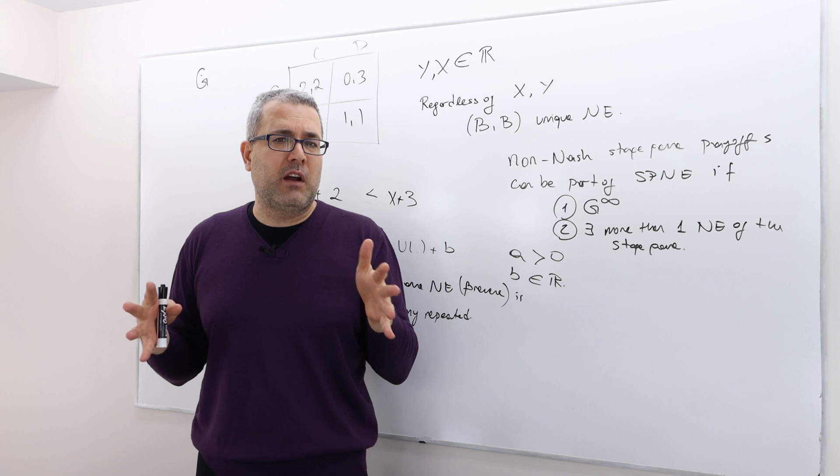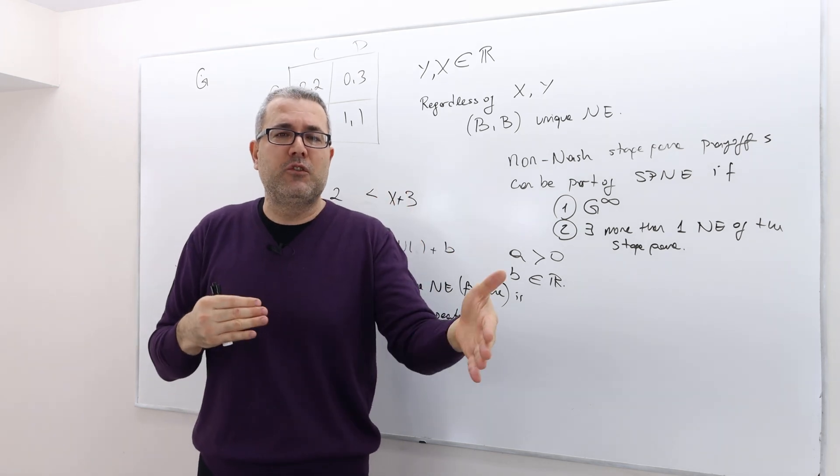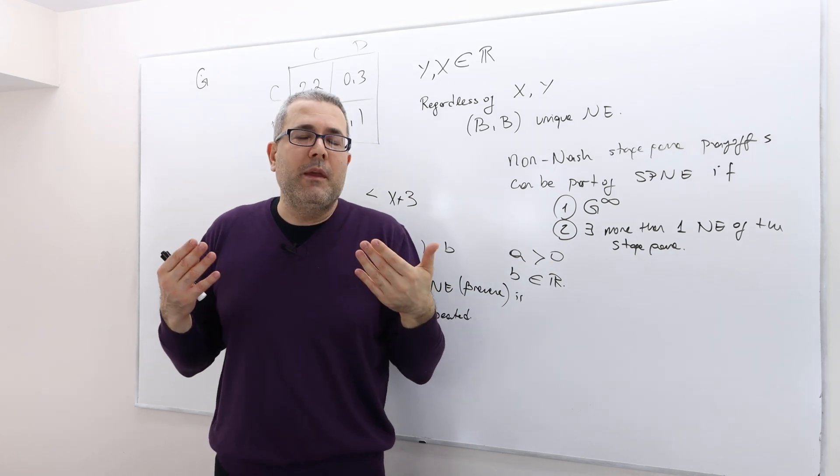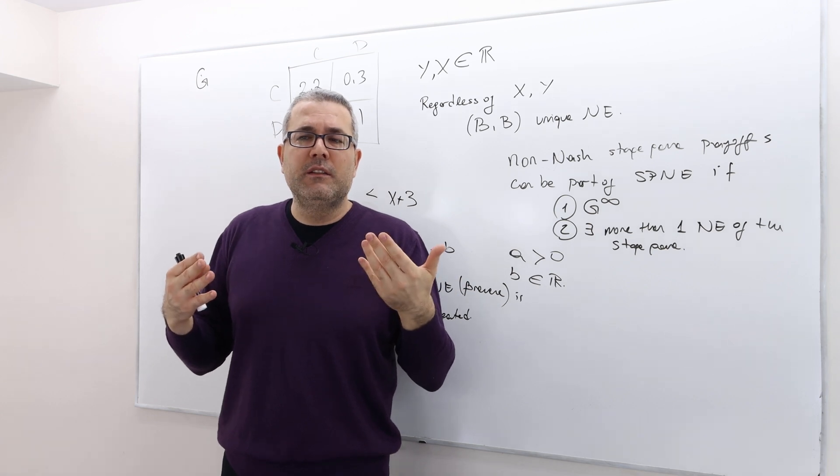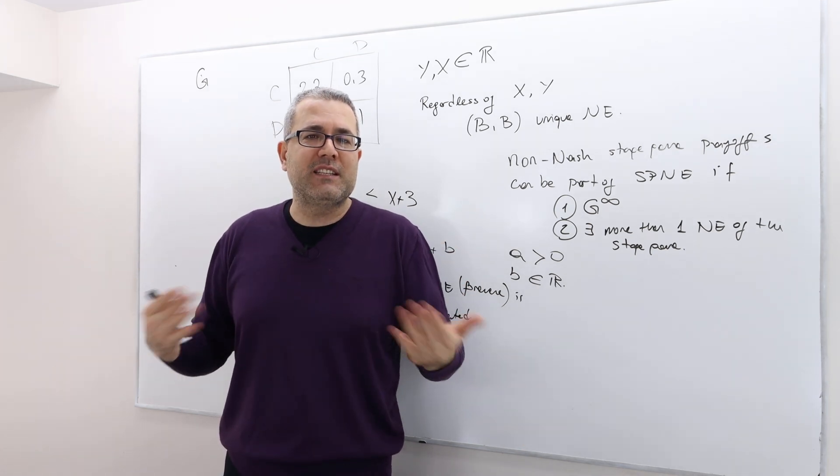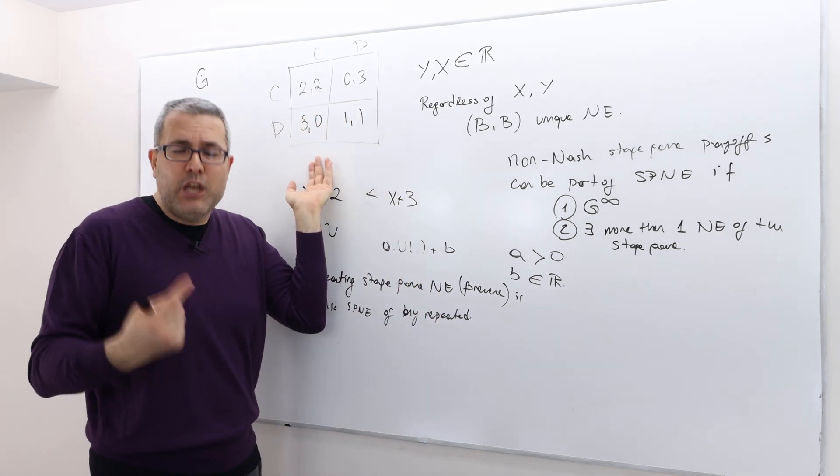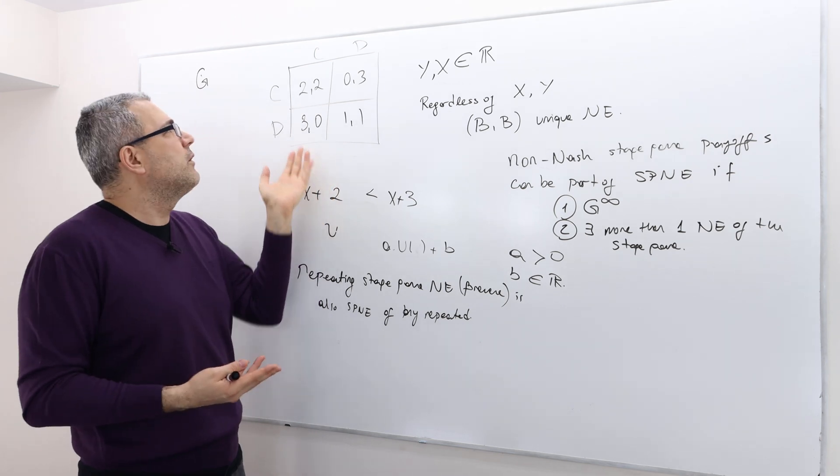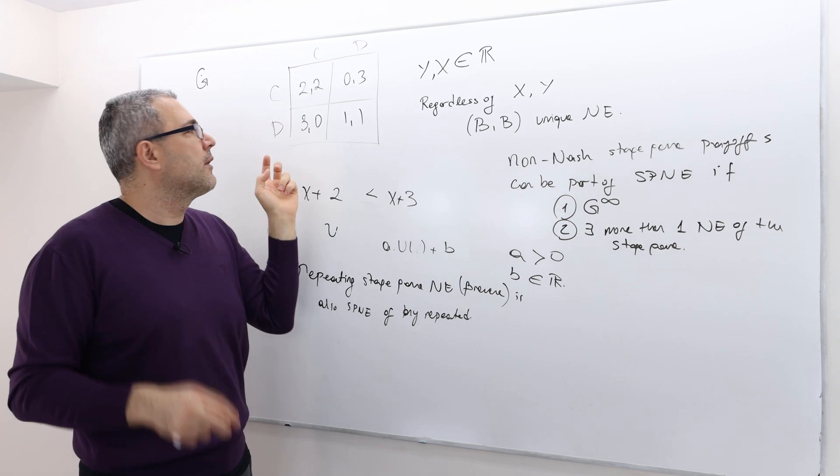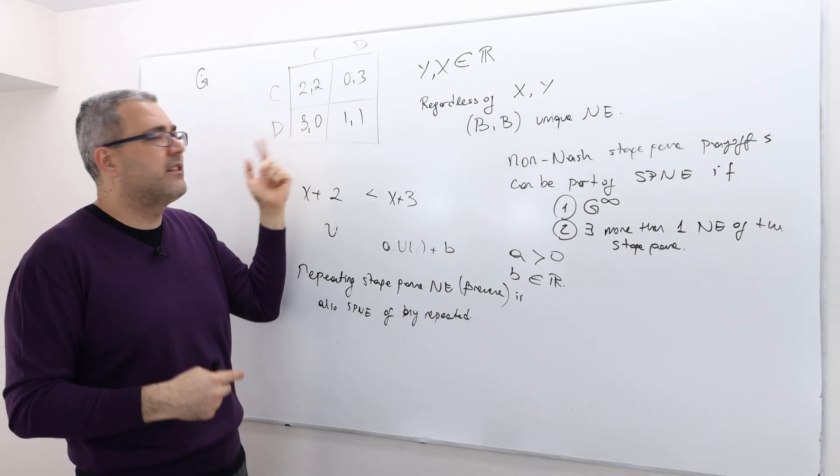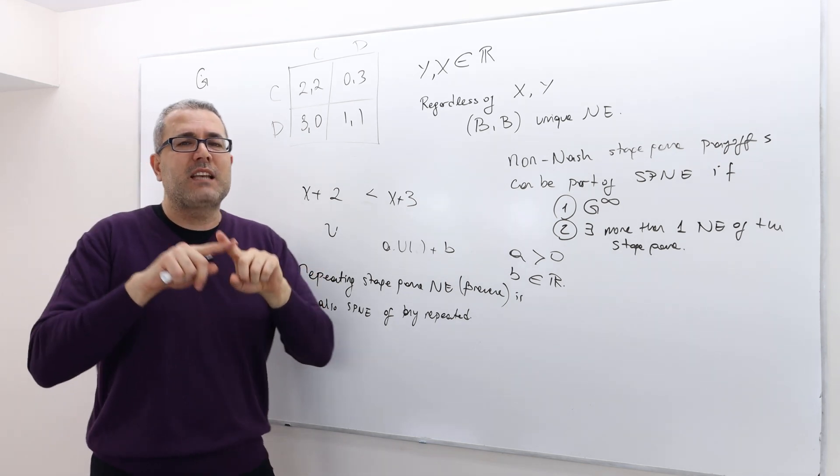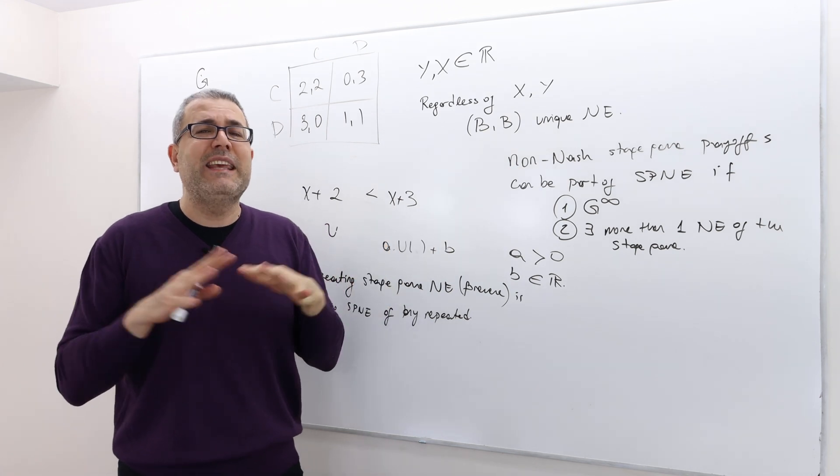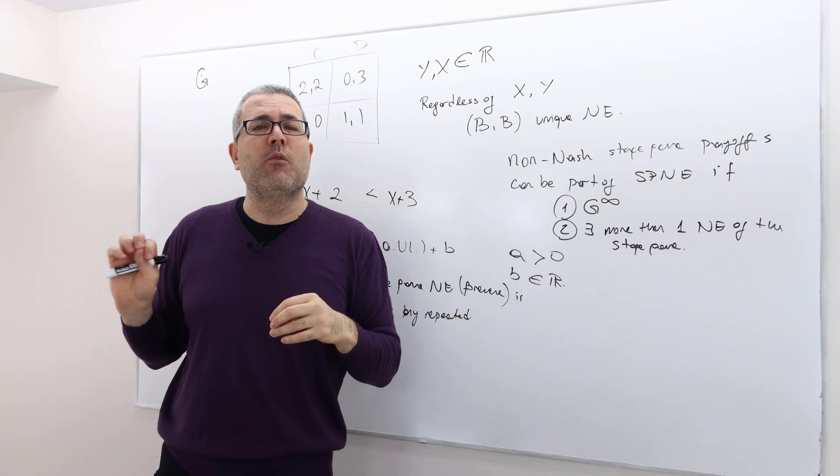However, if the game has a finite horizon - we're going to play today and tomorrow and then we're done - then at the last stage, why am I still cooperating with you? I know the game is going to be over tomorrow. If we're playing Prisoner's Dilemma and I know this is our last stage, I'm not going to treat this game different than the standard stage game. If I believe you're going to play C, I'm going to screw you and play D and get three.